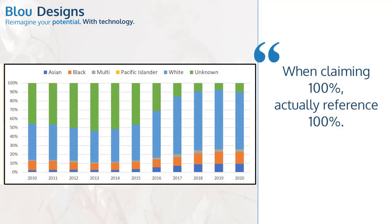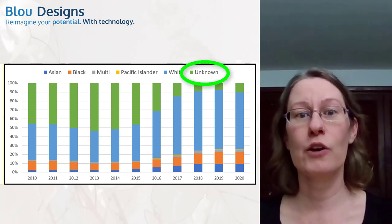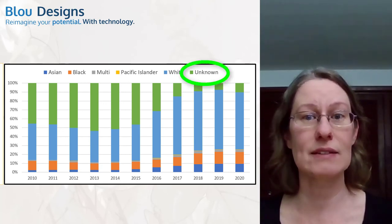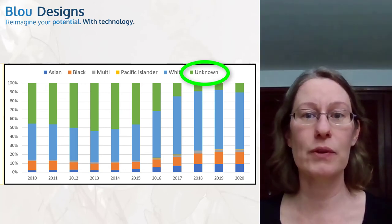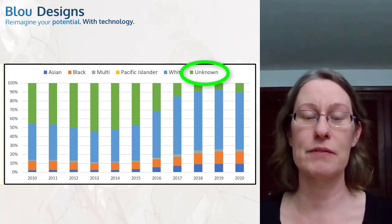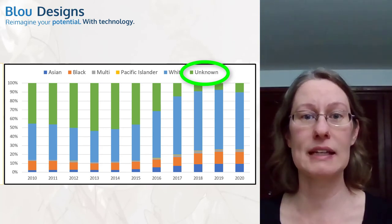I want to emphasize that this visualization claims a 100% representation of the population in question. So I've included a category for unknown, which ensures that each employee is still counted even if that employee opted out of answering demographic-related questions. The claim of 100% would be misleading otherwise.